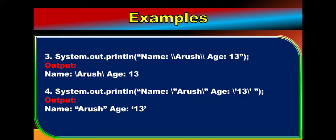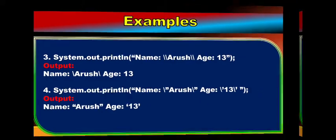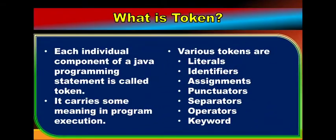Next is what is a Token. Basically, a token is the individual component of a Java programming statement and it carries some meaning in program execution. Each individual part of a programming statement is known as a token. Various tokens are: literals, identifiers, assignments, punctuators, separators, operators, and keywords.